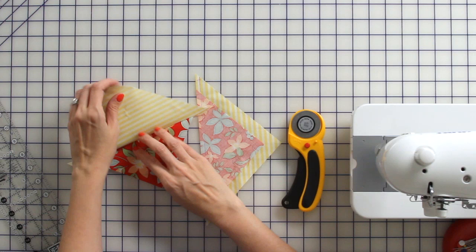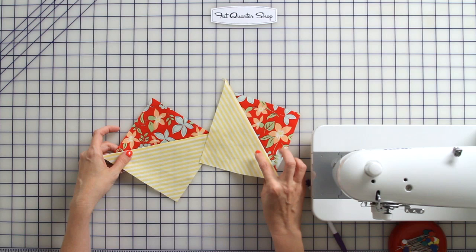So now you'll just take those units, put them right sides together with opposing fabrics touching, so your yellow and your red meet on both sides.